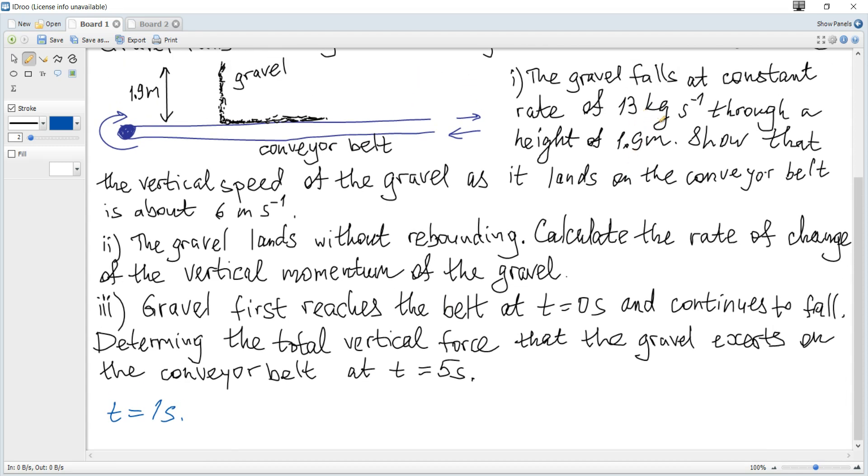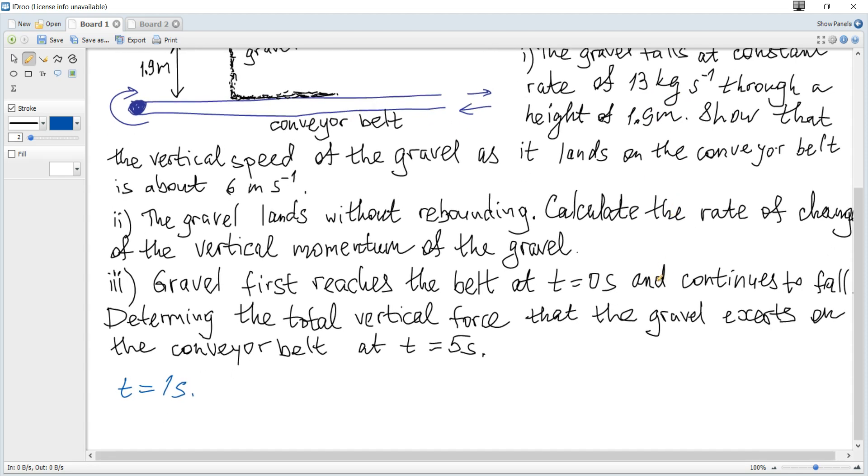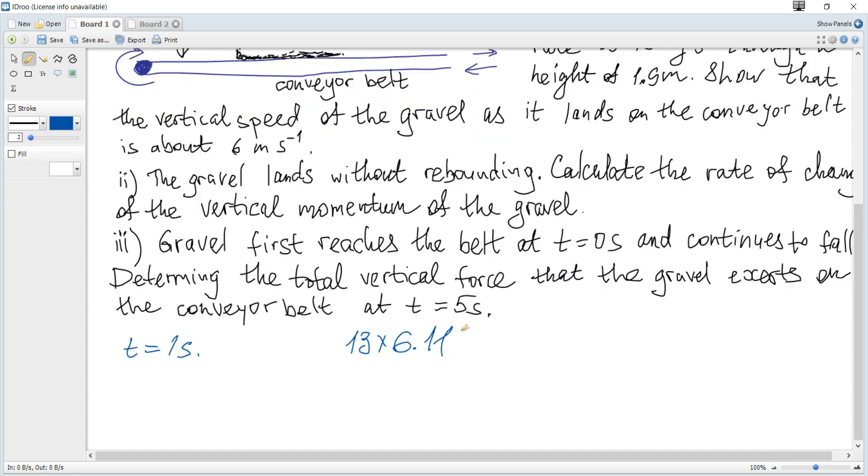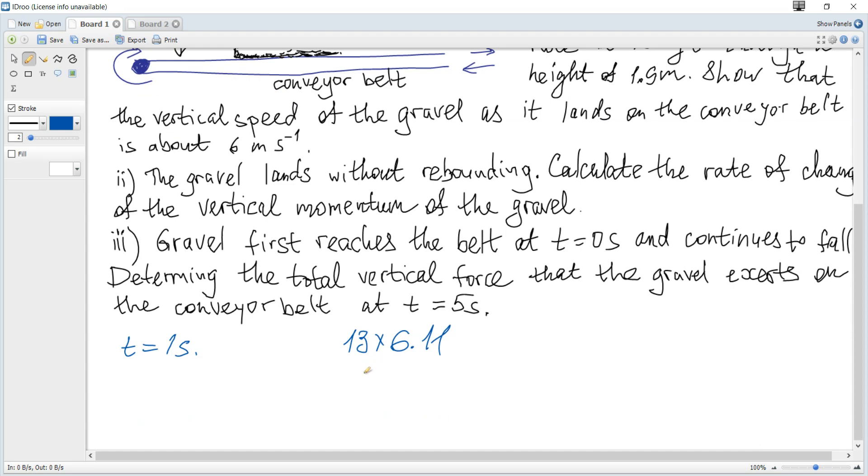Since the rate of change of the mass is 13 kg per second, during one second, 13 kg of gravel fall. Hence, the mass is 13, and 13 multiplied by initial velocity just before the belt is 6.11. The final momentum is zero. Hence, changing momentum by magnitude during one second is this value. Momentum divided by time, so if we divide by one second, we get the rate of change of momentum, and it is equal to 79 newtons.